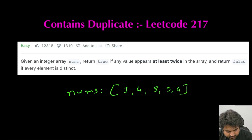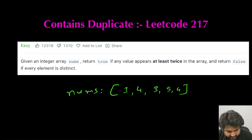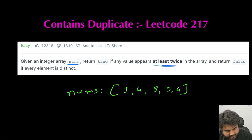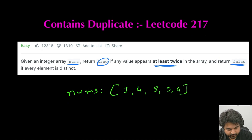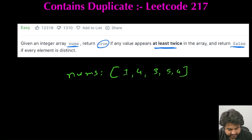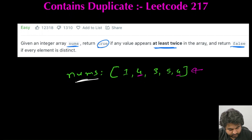The LeetCode problem we are going to solve is called Contains Duplicate — a LeetCode easy and extremely well-liked problem. The statement is straightforward: given an integer array called nums, if any particular value appears at least twice we return true, indicating duplicates exist. For example, if value 4 appears twice in the input array, we return true.